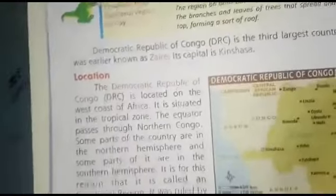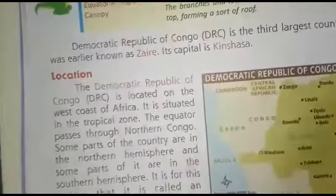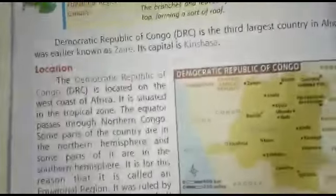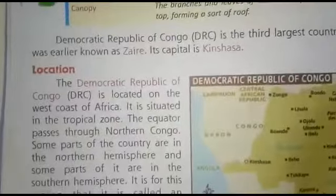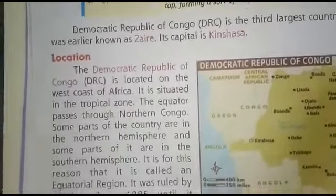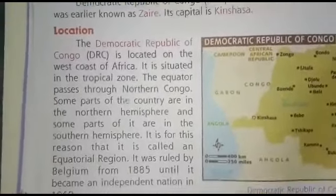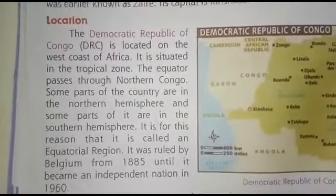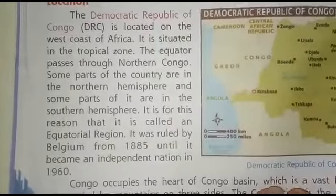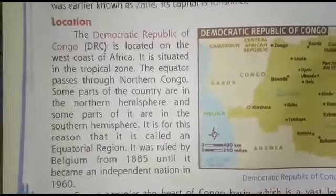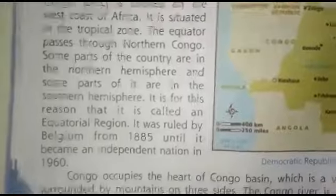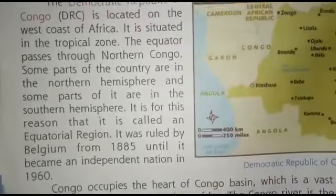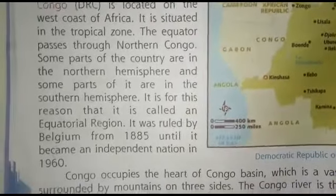We can see which parts are in the northern hemisphere and which are in the southern hemisphere. It is for this reason that it is called the equatorial region. It was ruled by Belgium from 1885 until it became an independent nation in 1960.